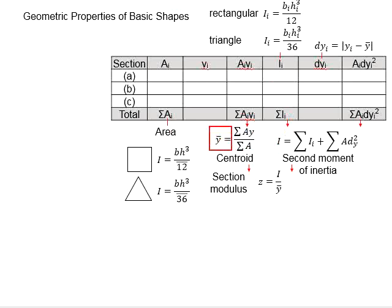Next, you need to use the centroid and the second moment of inertia to determine the section modulus. The equation is the second moment of inertia divided by the centroid.